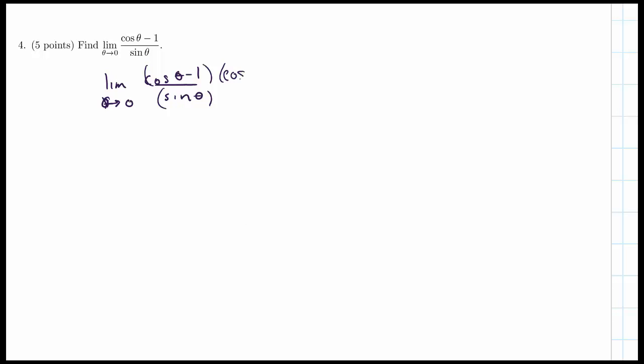How about I try multiplying this by cosine plus one, the conjugate. I choose the conjugate mostly because I know that the Pythagorean identity is likely to come to my rescue here.